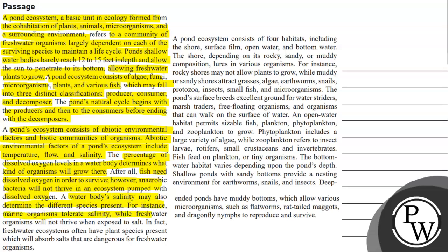For instance, marine organisms tolerate salinity while freshwater organisms will not thrive when exposed to salt. In fact, freshwater ecosystems often have plant species present which will absorb salts that are dangerous for freshwater organisms. A pond ecosystem consists of four habitats including the shore, surface film, open water and bottom water.